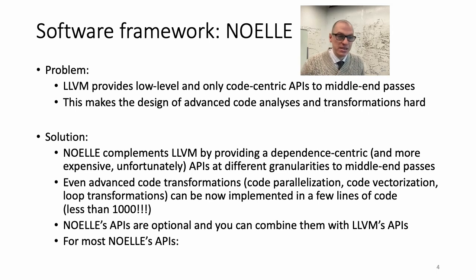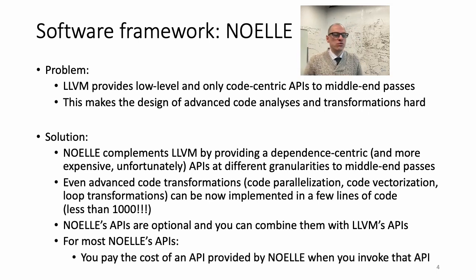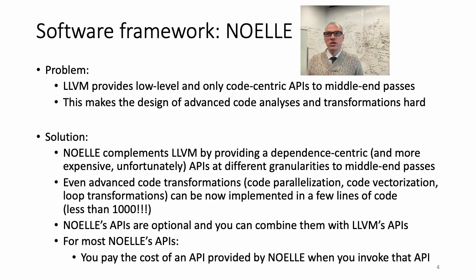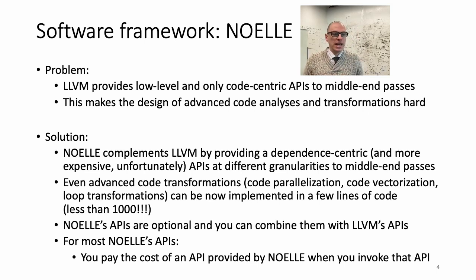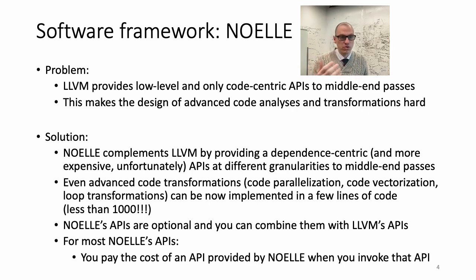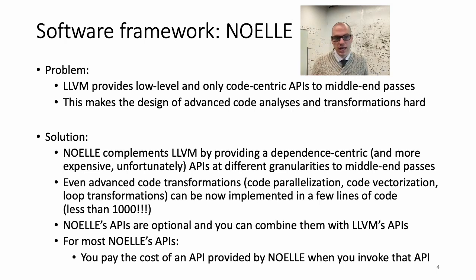For the great majority of NOEL APIs — and in the long run it's going to be all APIs of NOEL — you pay the cost of using these APIs only when you use them. These APIs provide information about dependencies of the code, which are not first-class citizens in LLVM IR, meaning you have to compute them. So when you use NOEL and ask for a specific dependence-centric view of a code region, for example a loop, you pay the cost of computing that property only when you ask for it. This is NOEL's pay-as-you-go model.